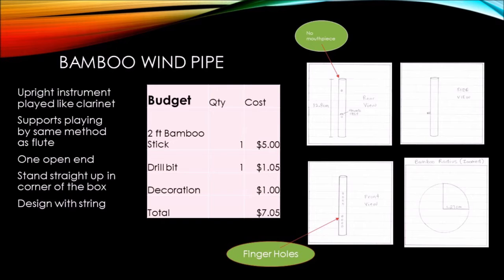Team 5 decided their wind instrument would be a bamboo windpipe. Played upright like a clarinet but with no mouthpiece, so it can also be played like a flute. The instrument is designed to stand straight up in the band's box, supporting our size constraints, and will have fingering holes to vary the pitch for all required frequencies. This meets our material constraints and the criteria for achieving multiple tones. The bamboo windpipe will also be designed with strings to give it a native appeal, all budgeted at $7.05.